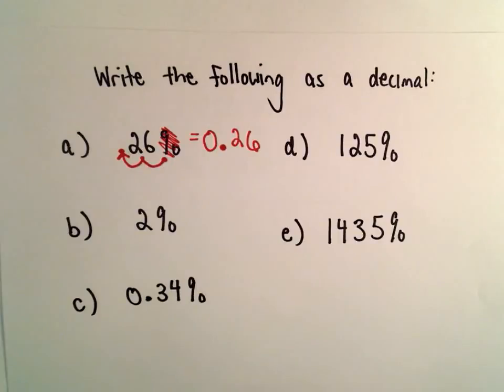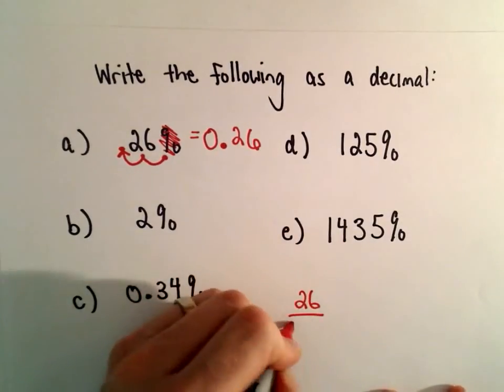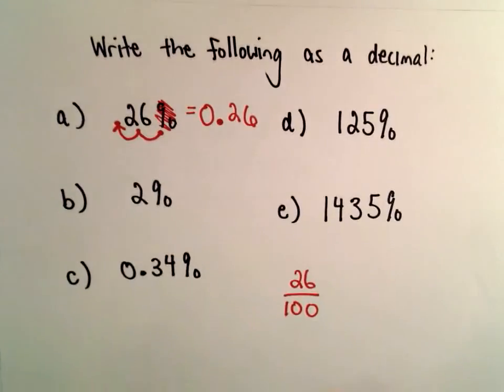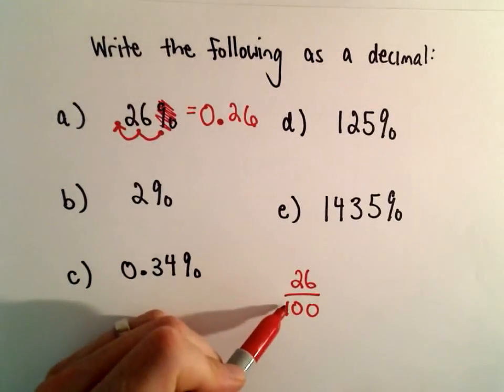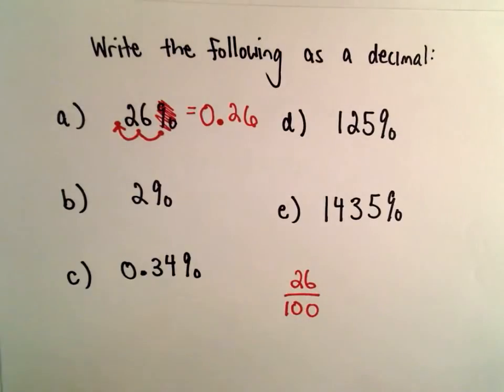And again, the reason why we're doing that, we saw that we could write a percentage as a fraction by just dividing it by 100. And if you divide something by 100, you in effect move the decimal place two places. But as a shortcut, that's all we're doing.